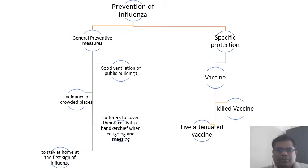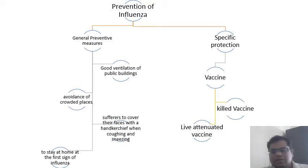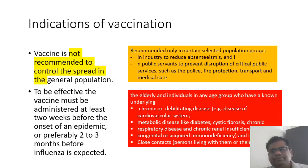How do you prevent influenza? There are general and specific preventive measures. Specific preventive measures include killed and live attenuated vaccines. General preventive measures include good ventilation of public buildings, avoidance of crowded places, covering the face when coughing or sneezing, following respiratory etiquette, and staying at home at the first sign of influenza to prevent its spread.